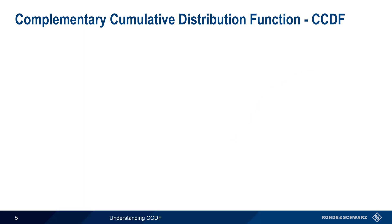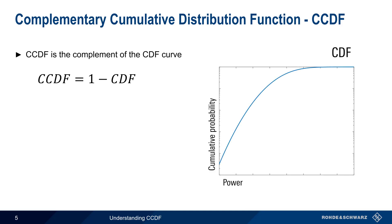Using the Cumulative Distribution Function, we can now compute the Complementary Cumulative Distribution Function, or CCDF. As the name implies, CCDF is the complement of the CDF curve. This means that the CCDF curve values are just 1 minus the CDF curve values. Let's pick a point on the CCDF curve. Here, a power value of plus 10 dBm corresponds to a probability of only 0.05.